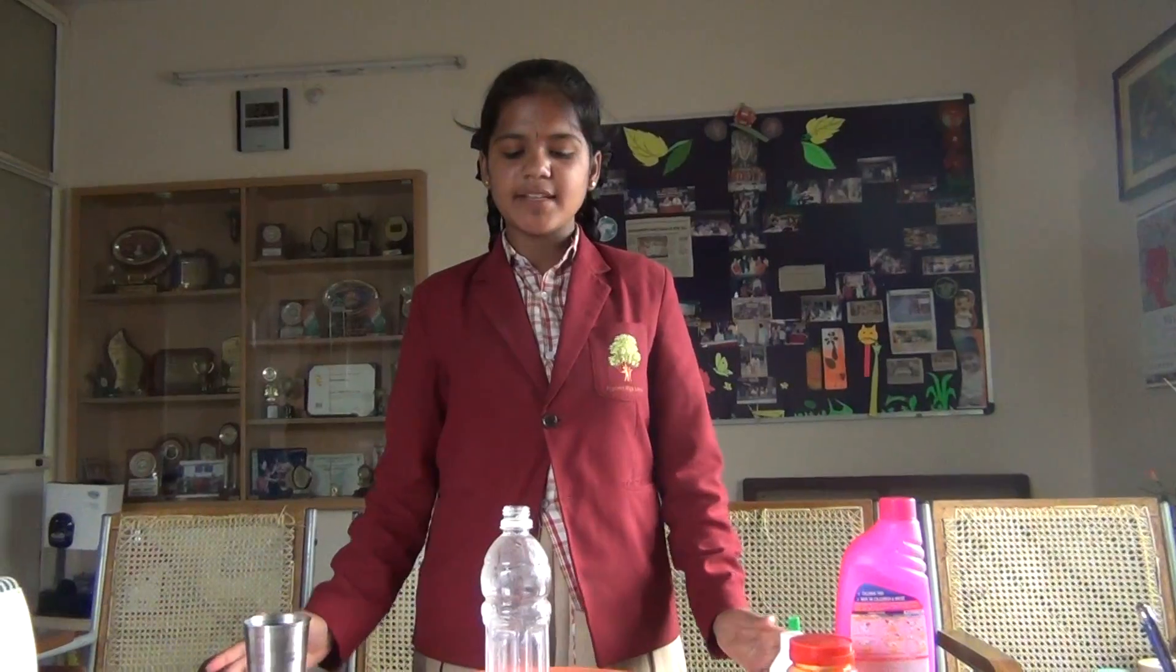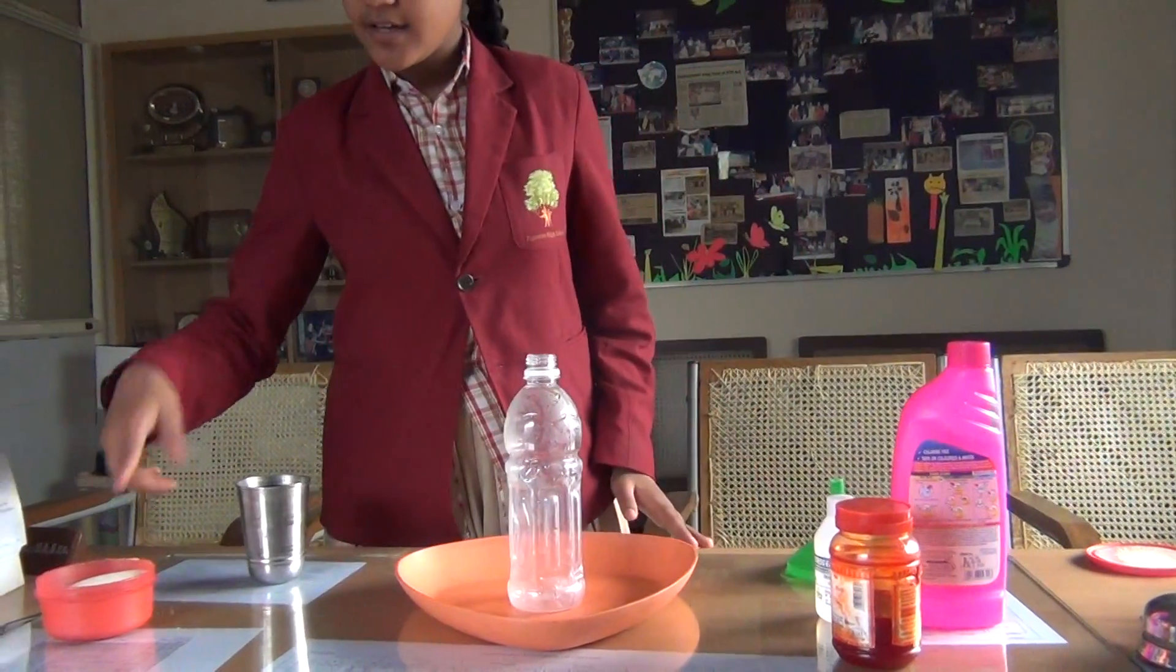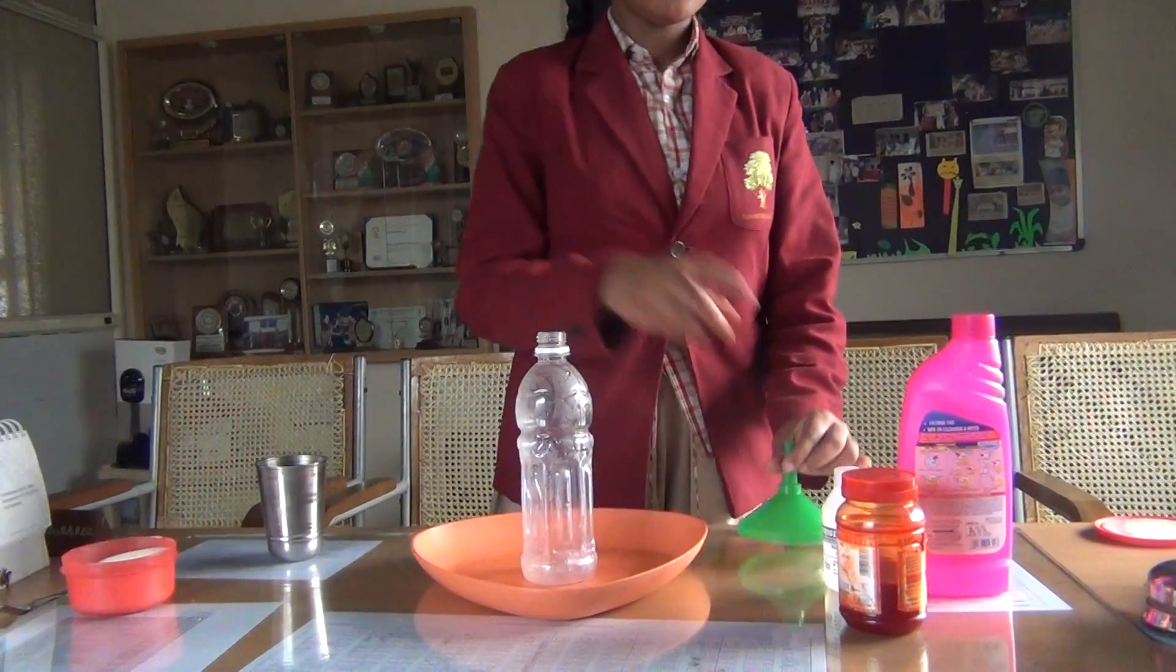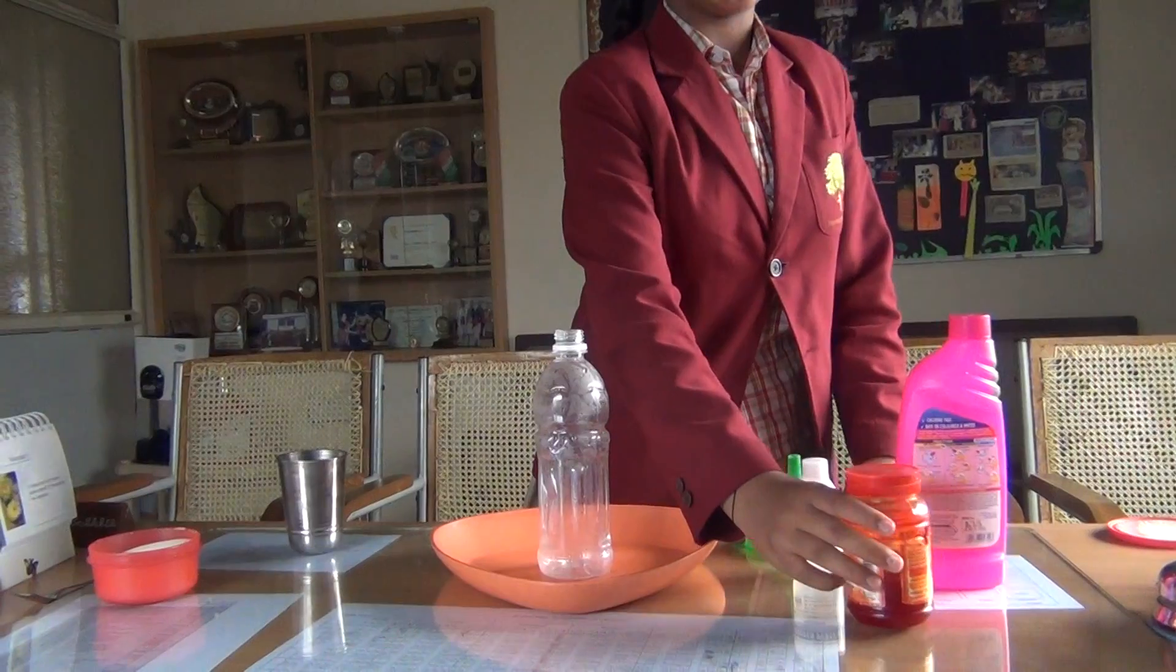Materials required for this experiment are a bottle, a tray, some yeast, warm water, funnel, hydrogen peroxide, cleaning agent, and some food colour.